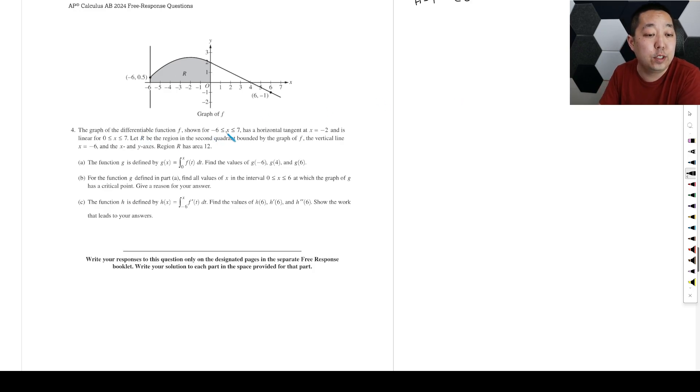Graph of the differentiable function has a horizontal tangent line at x equals negative two. So right there, it's horizontal. And is linear from zero to seven. Kind of interesting piecewise. Let R be the region of the second quadrant bounded by the graph F and the vertical line x equals negative six. Region R has an area of 12. The function G is defined by this. Find the values.